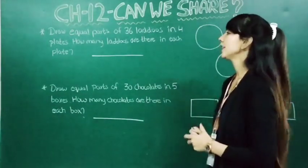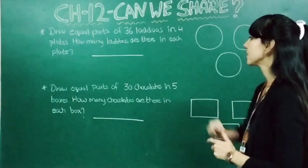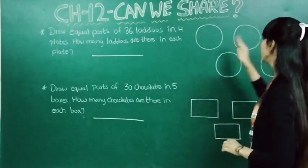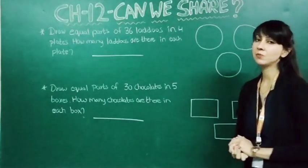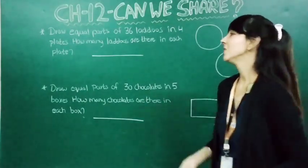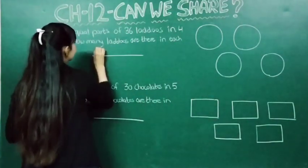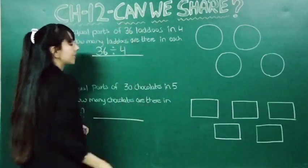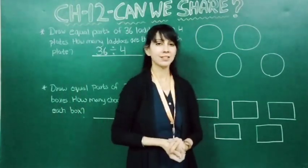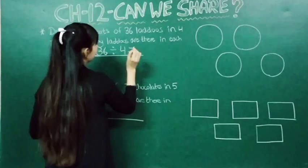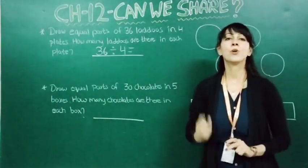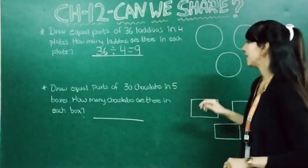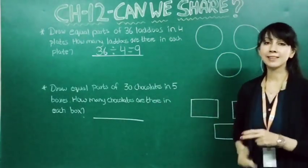Now students, moving to the next. Draw equal parts of thirty-six laddus in four plates. How many laddus are there in each plate? Here you can see four plates, and we have to divide laddus into equal plates. Thirty-six divided by four — because thirty-six laddus are there and four plates are there. When thirty-six comes in the table of four? Four nines are thirty-six, so here it is nine. In each plate we will draw nine laddus.